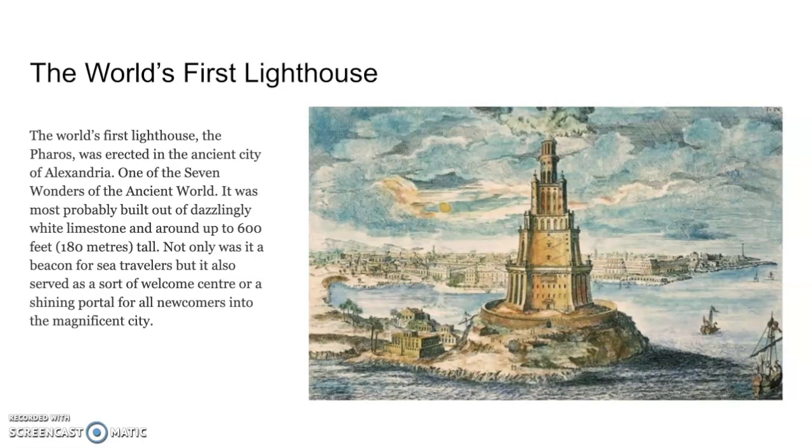Let's learn a little bit more about the lighthouse. The world's first lighthouse was called the Pharos, in the ancient city of Alexandria in Egypt. It was one of the Seven Wonders of the Ancient World, probably built out of limestone and stood about 600 feet tall.